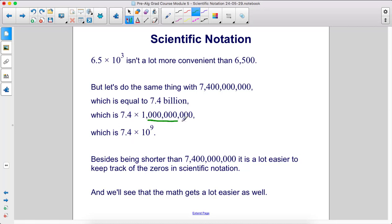Remember, the number of zeros in this number is equivalent to the exponent when we're in base 10. Besides being shorter than this number, it's a lot easier to keep track of the zeros in scientific notation. We don't want to have to count the zeros every time we see a big number. It's easier just to see that 9 here. And therefore, we'll see that the math gets a lot easier as well.